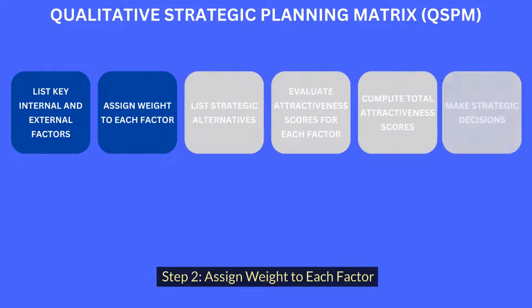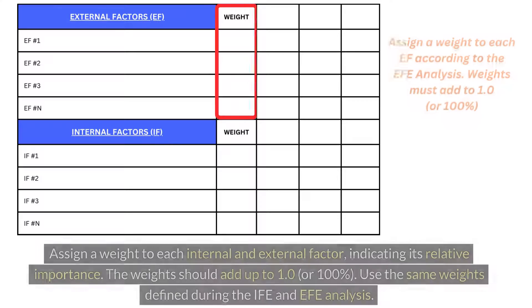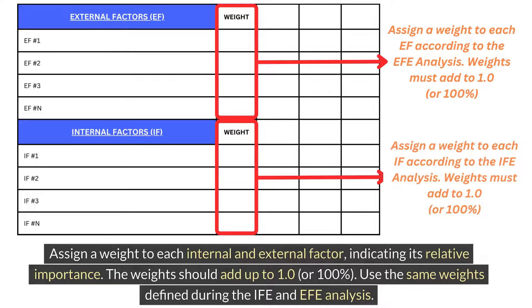Step 2: Assign a weight to each factor. Assign a weight to each internal and external factor, indicating its relative importance. The weights should add up to 1.0, or 100%. Use the same weights defined during the IFE and EFE analysis.